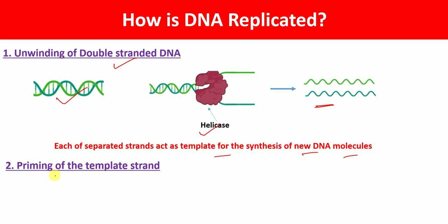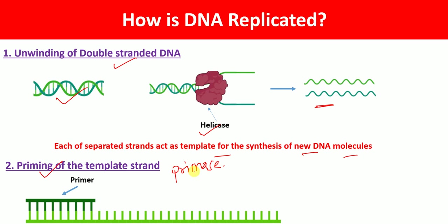The next step in the DNA replication process is priming of the template strand. The enzyme called primase is responsible for the synthesis of a small segment of nucleotides — a single-stranded small segment — called a primer. This primer is added to the template strand.